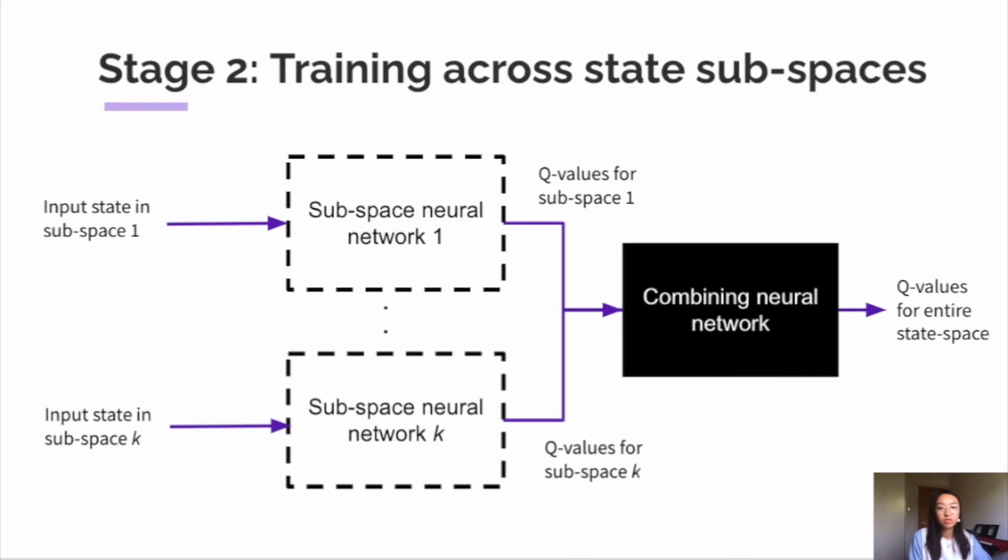After a set number of episodes, which can be adjusted by the programmer, we transition into stage two of training. And the aim of this stage is to combine our learned subproblems to form a global optimal solution for the full environment. And we do this by refining our learned Q-values from stage one, by taking into account inter subspace transitions.